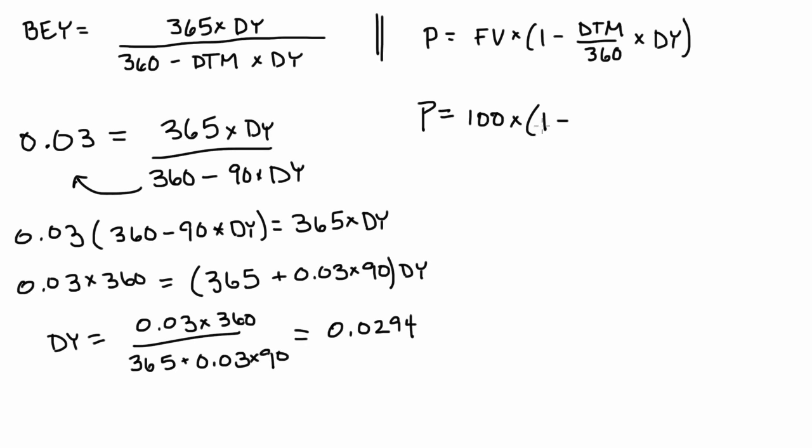We know the days to maturity is 90. And we just figured out what the discount yield is, which is this 2.94%. Once we plug this all into the calculator, we find that the price of this t-bill is equal to $99.27.